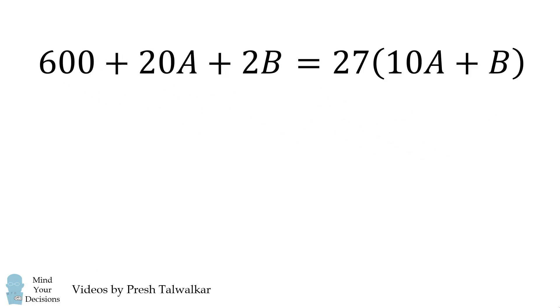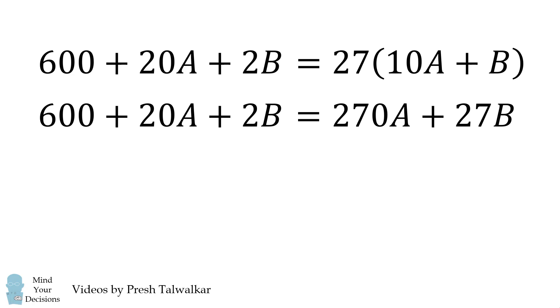This is equal to 27 times my original number. We then want to solve this equation. We'll first distribute the 27, and then we will collect like terms.